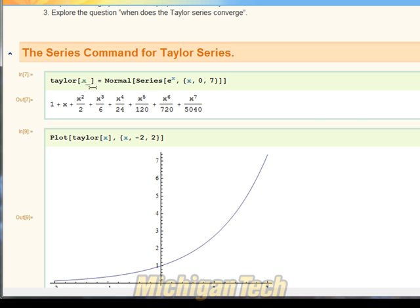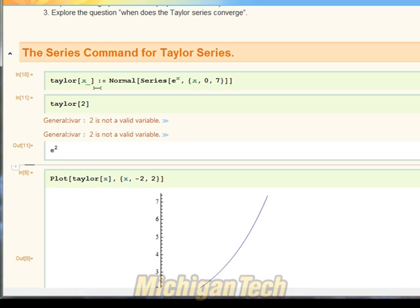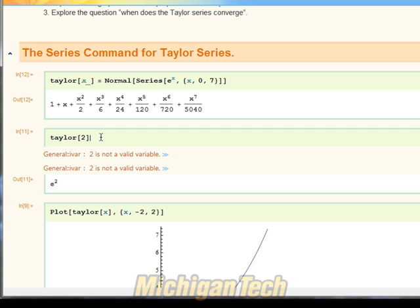And one thing I'm going to stress again is that you have to use equal here, not colon equal. If I use colon equal, and I evaluate this, and I try to use this to find maybe the Taylor polynomial evaluated at two, I'll get an error message. And the reason for that is when I use the colon equal, and I try to use this command, it actually looks back at this expression, and everywhere in this expression it's going to put x equals two. And so that's the problem when I try to input a two here, because that doesn't fit in the command of series. So that's why I must use equal to define this function, and not colon equal.